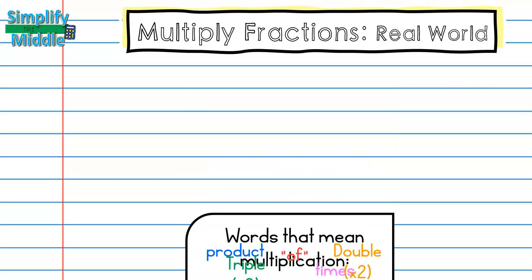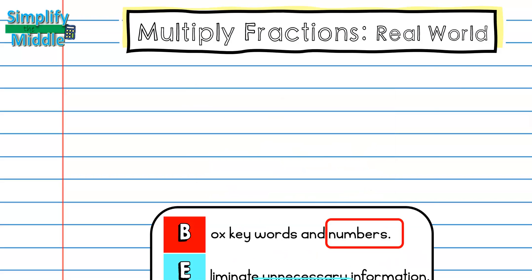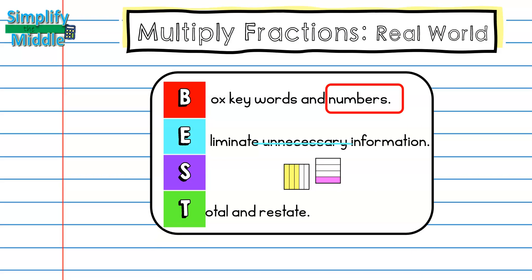So we're going to need to strategize. We're going to use the BEST method here: Box our keywords and numbers, Eliminate unnecessary information, Strategize, and then Total and restate at the end. We're going to find the solution and restate it in the problem to make sure we're answering what the problem is asking us for.